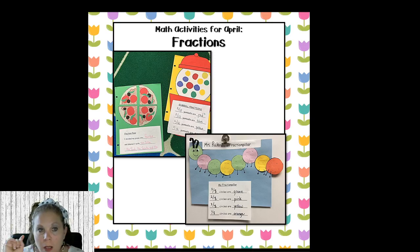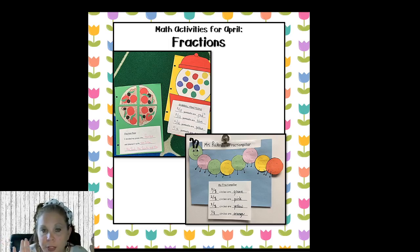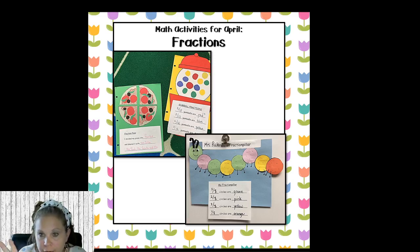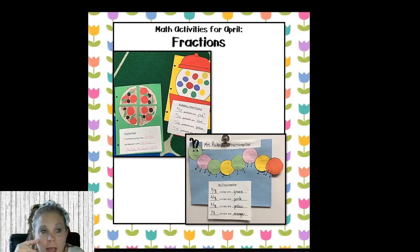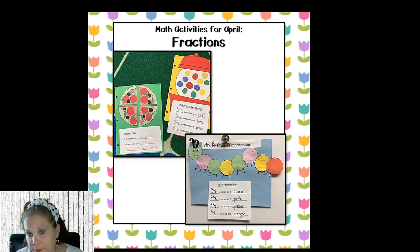Two other fun fraction activities: a gumball machine where kids choose four different colors and write fractions like two out of twelve gumballs are red, three out of twelve are blue, four out of twelve are yellow, and three out of twelve are green. And of course pizza — they create a pizza with toppings like pepperoni and mushrooms, divide it into fourths, sixths, or halves, and write 'I divided my pizza into fourths and shared it with' their friends' names, showing equal shares. I typically do these math craftivities at my teacher table during guided math rotations so I can help them, and I like to hang them in the hallway or classroom using clothespins from the ceiling.